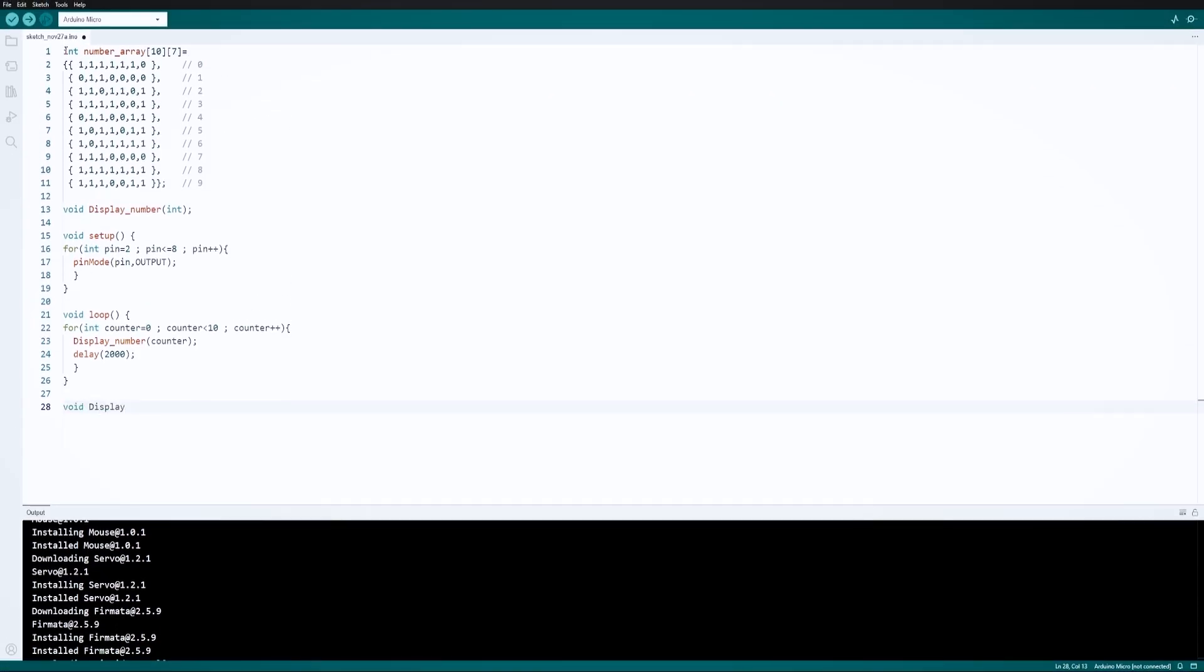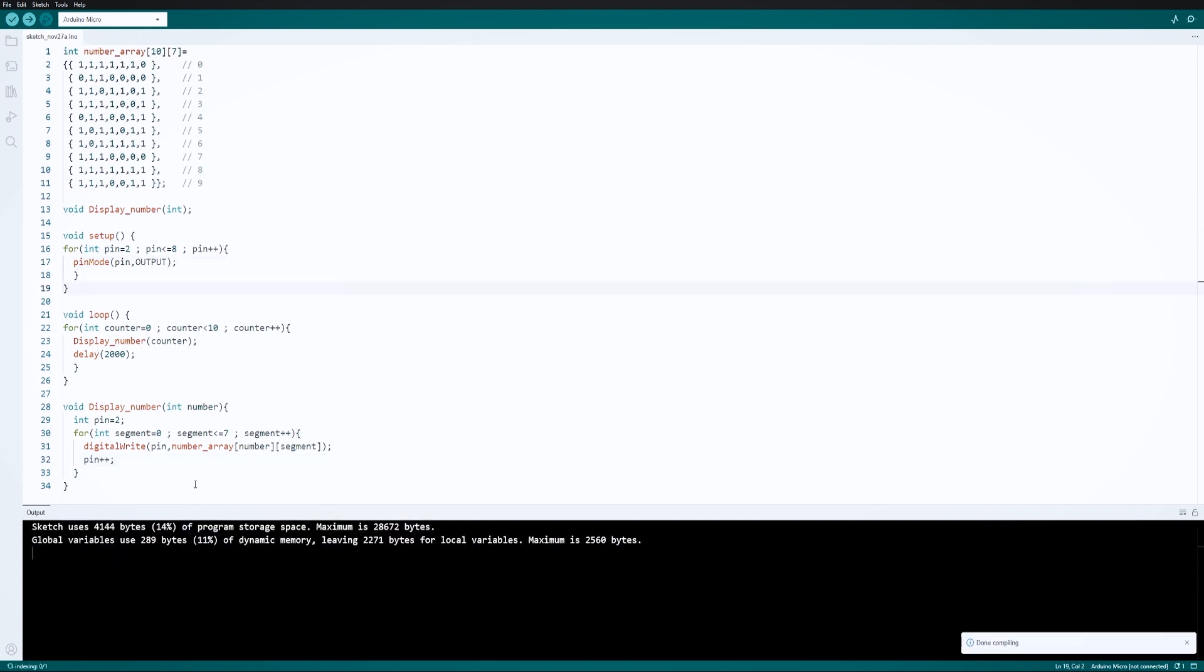We will finish writing our previously created display number function in the last lines of code. First and foremost, we create an integer called pin and set it to two. It will be helpful later to faster change the pin that we are controlling. Afterward, for loop is created to help read values from array rows. In that loop, the digital write command sets the voltage of the certain pin, which is determined by the array. In the last line, pin++ changes the pin that we are using and then repeats the cycle until all highs and lows are read from the chosen array row.